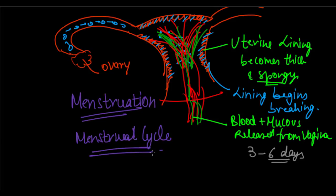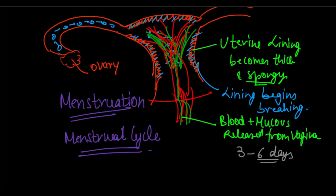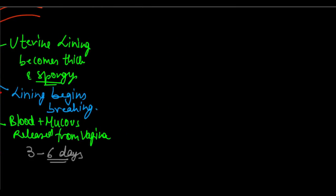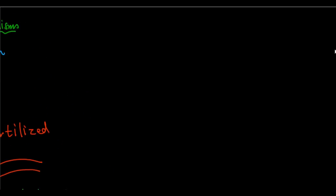This cycle occurs roughly every month and is known as the menstrual cycle. Every month, if the egg does not get fertilized, the woman releases blood and mucus from the vagina — she loses blood. This process is known as menstruation, and the non-fertilized egg is also expelled from the body.